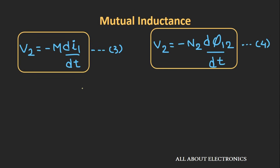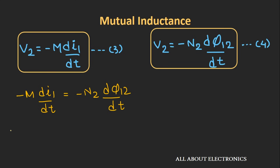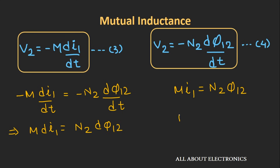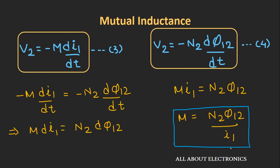Now comparing equations 3 and 4 to find mutual inductance in terms of magnetic flux: -M di1/dt = -N2 dφ12/dt, which gives M × i1 = N2 × φ12. So M = N2 × φ12 / i1. This is the expression for mutual inductance when current is flowing in coil 1.